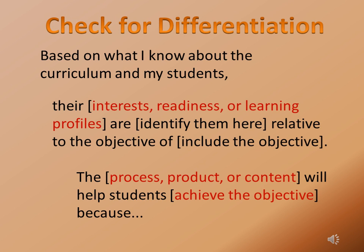A rule of thumb to check for differentiation is to fill in the areas in the brackets in this sentence: 'Based on what I know about the curriculum and my students, their interest, readiness, or learning profiles are [include what those actually are], relative to the objective [include that objective]. Then the process, product, or content will help students achieve the objective because...' and we finish the statement.